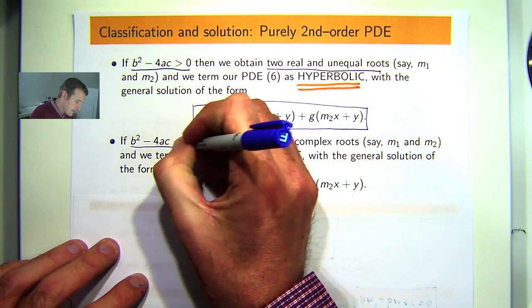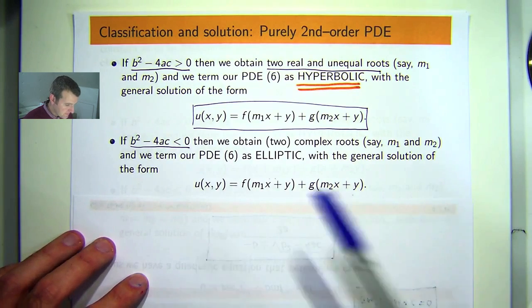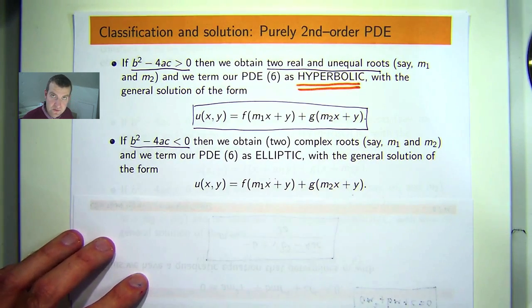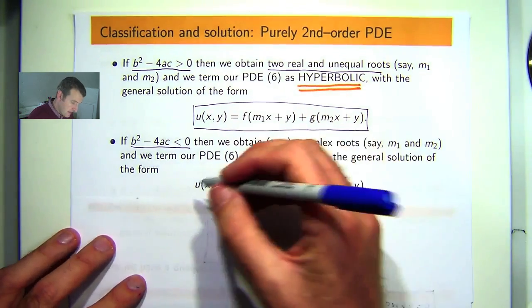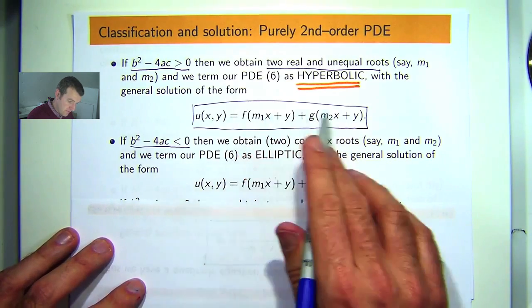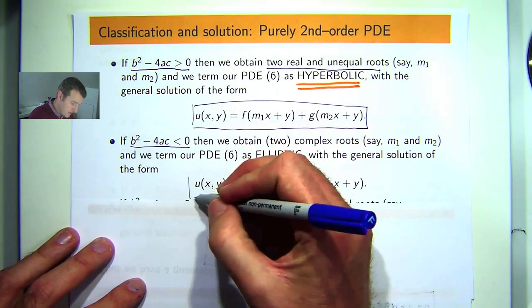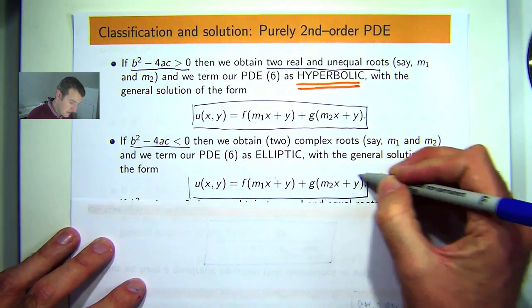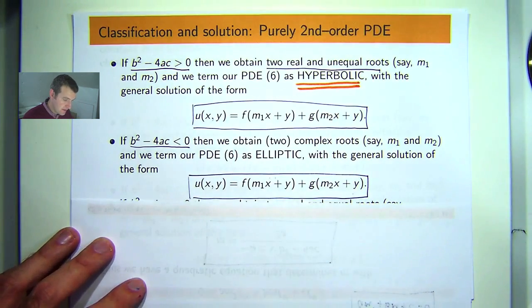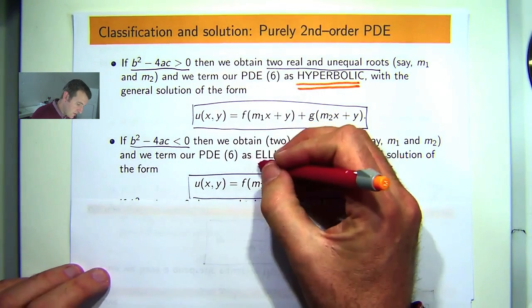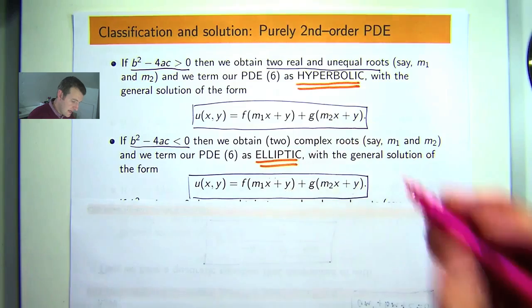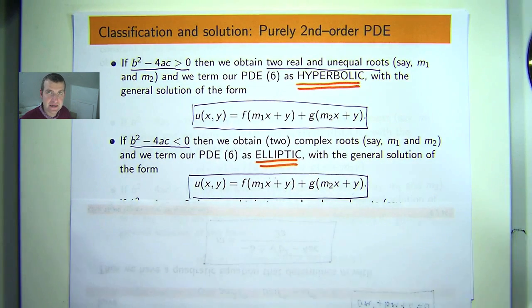If the discriminant is negative, then we obtain two complex roots. And the form is the same as the form up here, except M1 and M2 will be complex numbers. And in this case, we refer to the PDE 6 as an elliptic PDE.